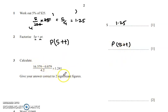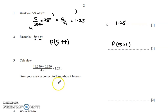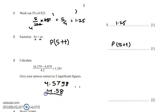Going to the next question: calculate the value and write it to two significant figures. We'll use a calculator here. Calculating 16.379 minus 0.879, divided by 4.2 into 1.241, gives approximately 4.5798. Rounding to two significant figures gives 4.6.